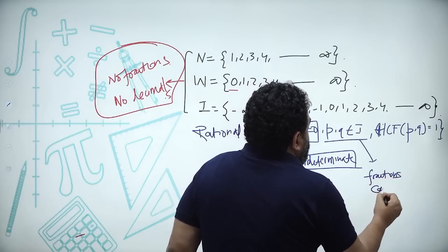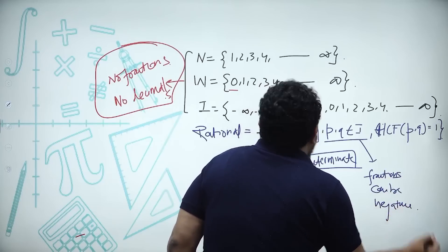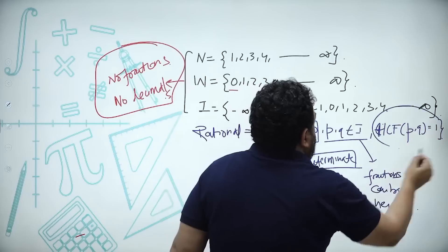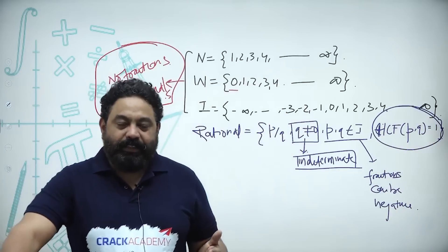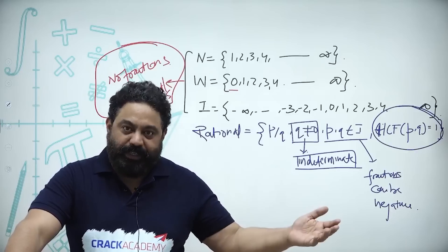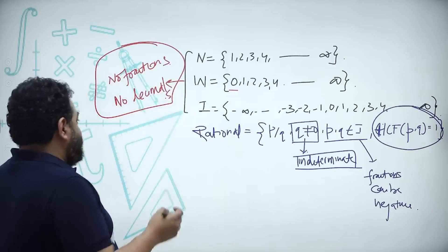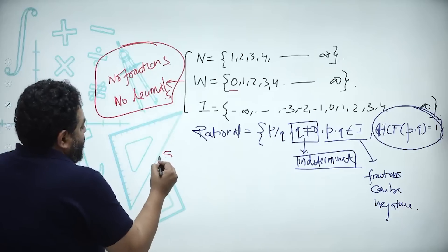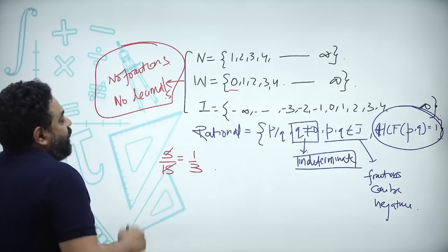The HCF of p and q is one because whenever you write a fraction, there should be no common factor between the denominator and numerator. Since childhood we have never written our answer as five by fifteen — we write it as one by three, cancelling the common factors. This is the condition for a properly reduced rational number.